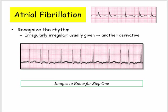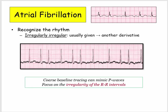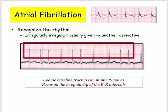This is a tracing I would put in your collection of images to know for Step 1. Note that students are expert at imagining P waves — the coarse fibrillatory waves can appear to have P wave morphology, so don't look for them in an irregularly irregular tracing. Instead, focus on the irregularity of the RR intervals. If you look at those, you'll have no trouble recognizing the underlying rhythm disturbance.